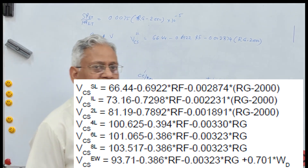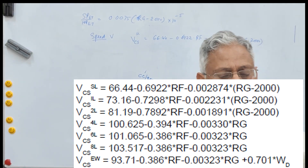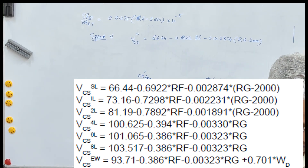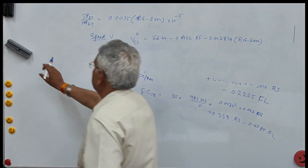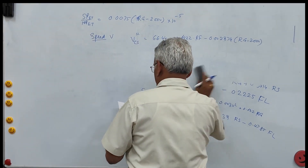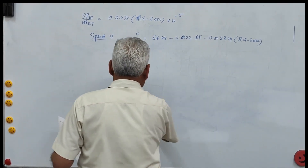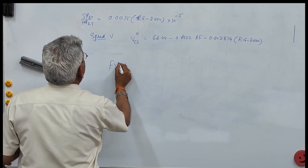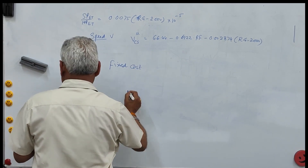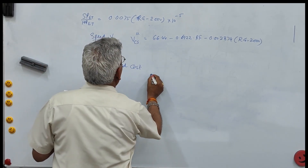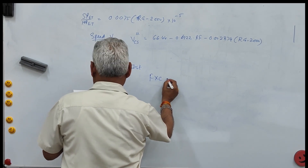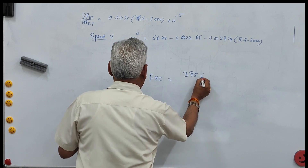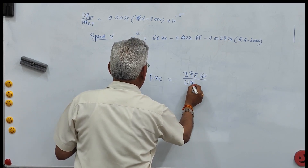Separate equations are given for different categories of roads. Another component of VOC is the fixed cost. This fixed cost FXC is given by 395.65 upon UPD, where UPD is the utilization per day of the vehicle.